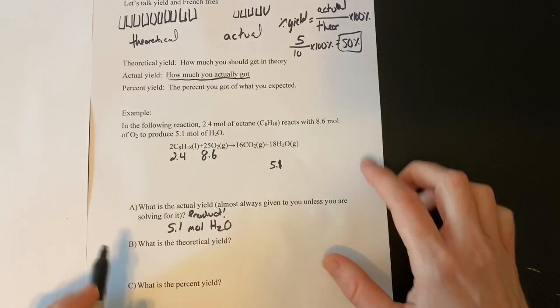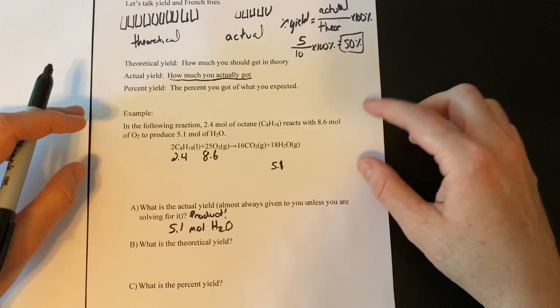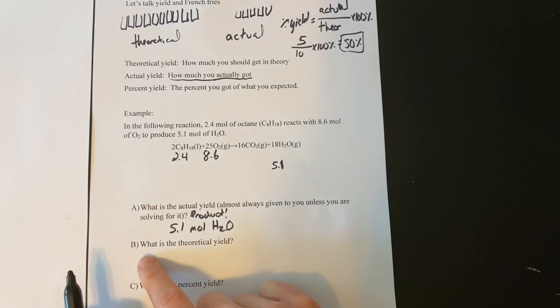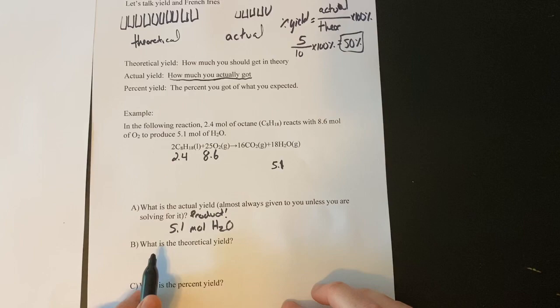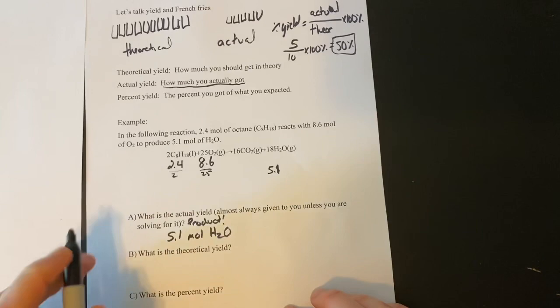And again, this is almost always going to be provided for you inside the problem itself. So, whenever something asks for an actual yield, it's usually going to be in the problem unless it's saying, find the actual yield. Okay, then it says, what is the theoretical yield? Well, if you remember, to calculate theoretical yield, we have to go through a series of steps. When we have two or more reactants, we have to first find the limiting reactant. So, we're going to divide this by 2 and divide this by 25 and ask which one's smaller.